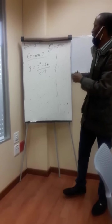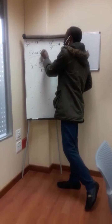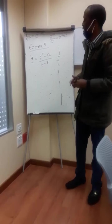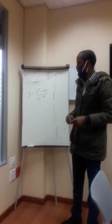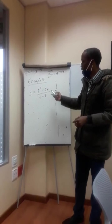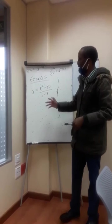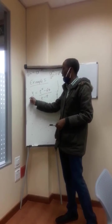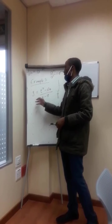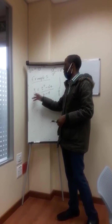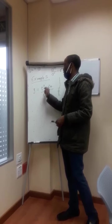This is the last example, example 5, on differentiation using the first principle. You have a question where you are asked to differentiate a mathematical function. In this case, you can see you are differentiating y with respect to t, because the dependent variable is y and the independent variable is t.